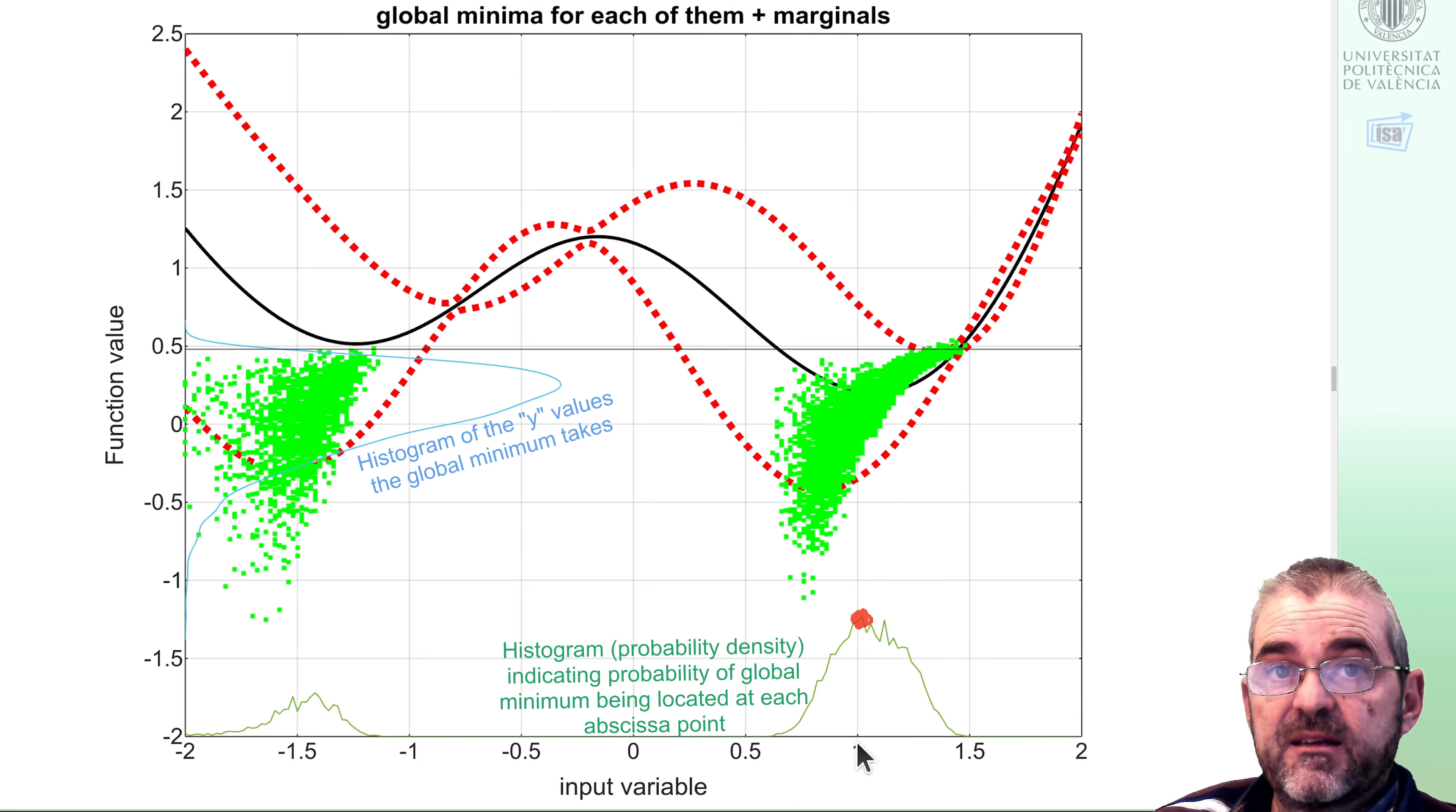But we have some problems here. First, my gridding of 200 test points may be okay in one dimension. But in two dimensions, my grid would be 200 squared. And in six dimensions, it would be 200 to the sixth power. So this gridding approach doesn't scale well. Also, I have here 8000 realizations and I obtained the minimum of 8000 functions.